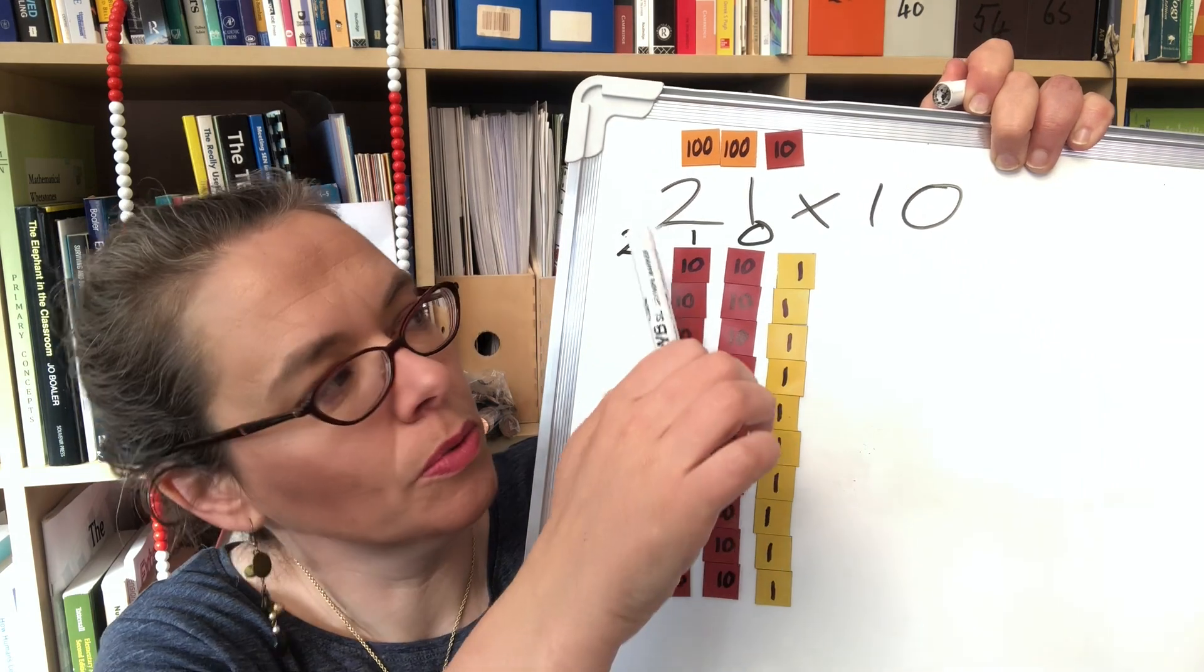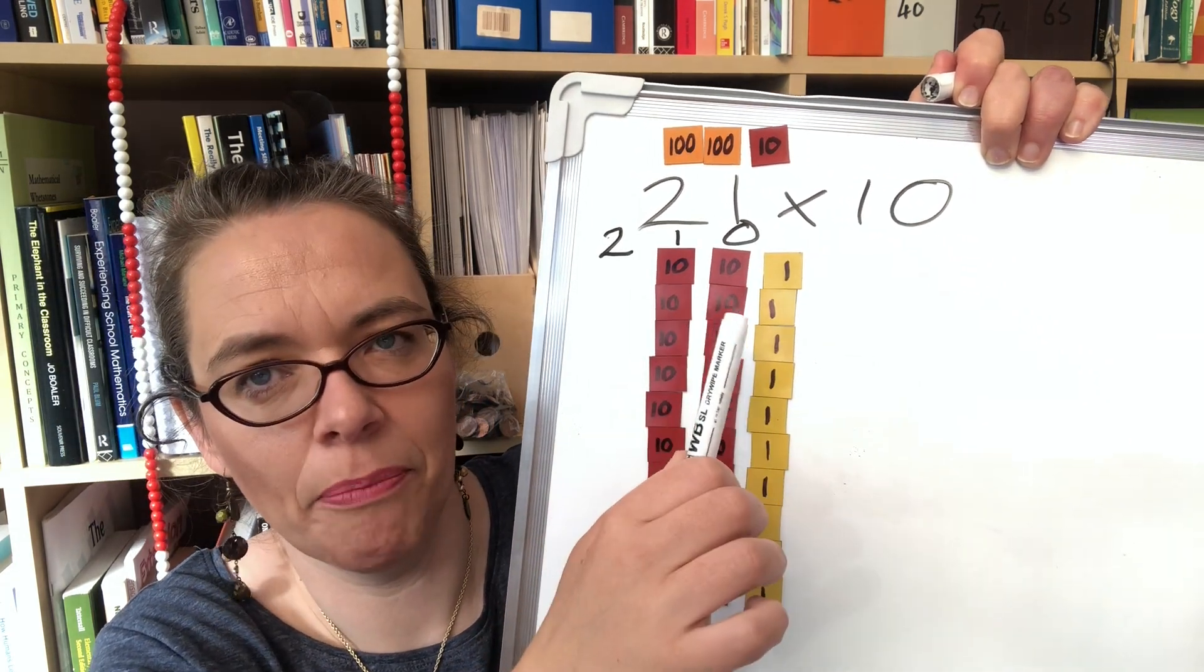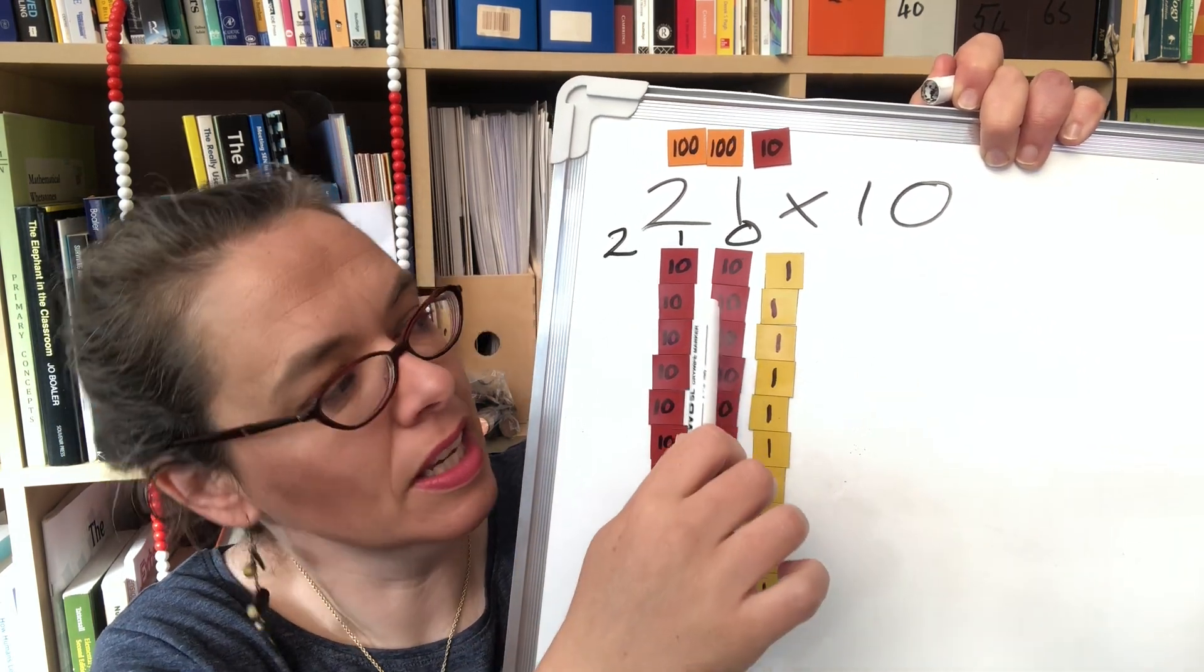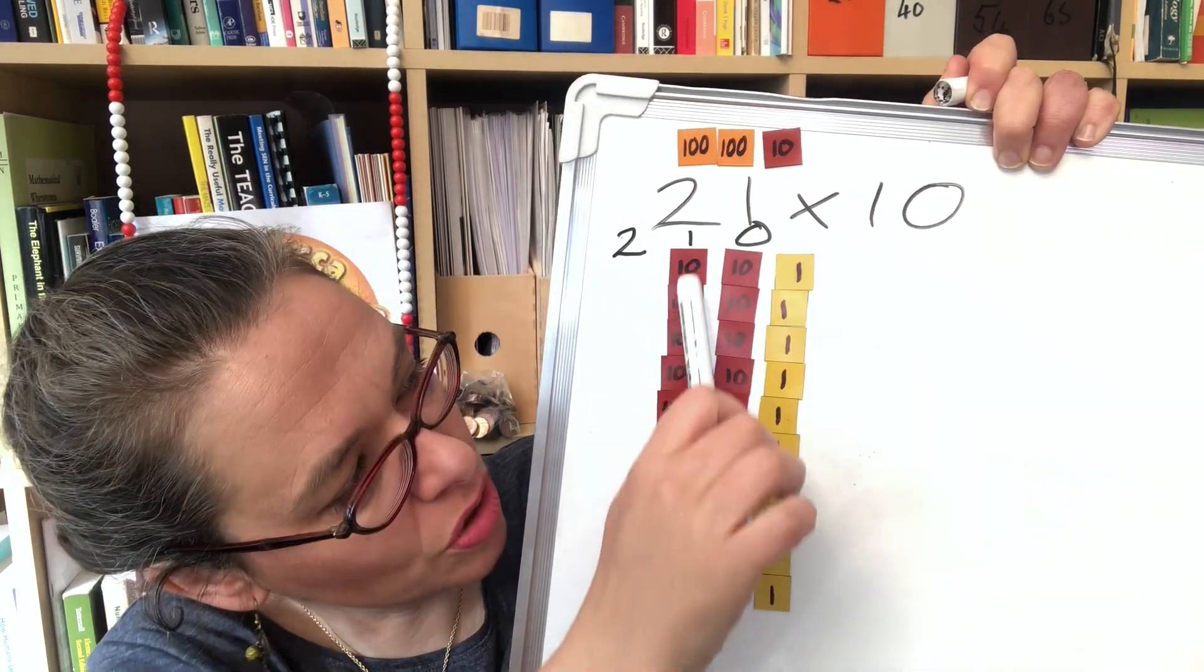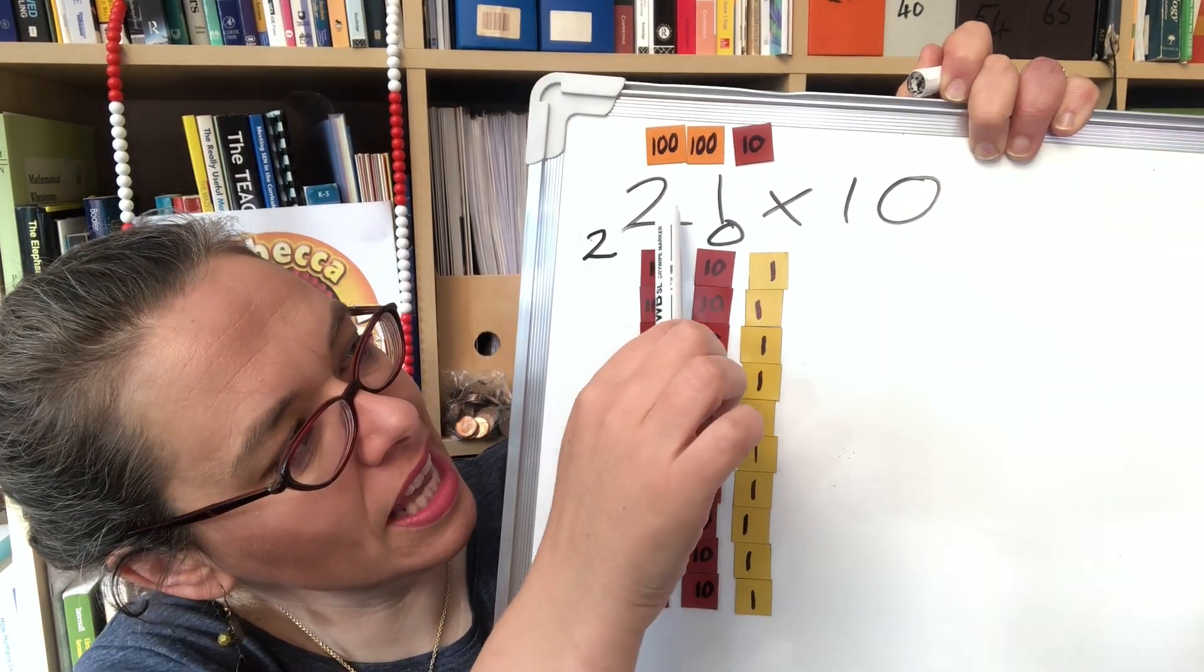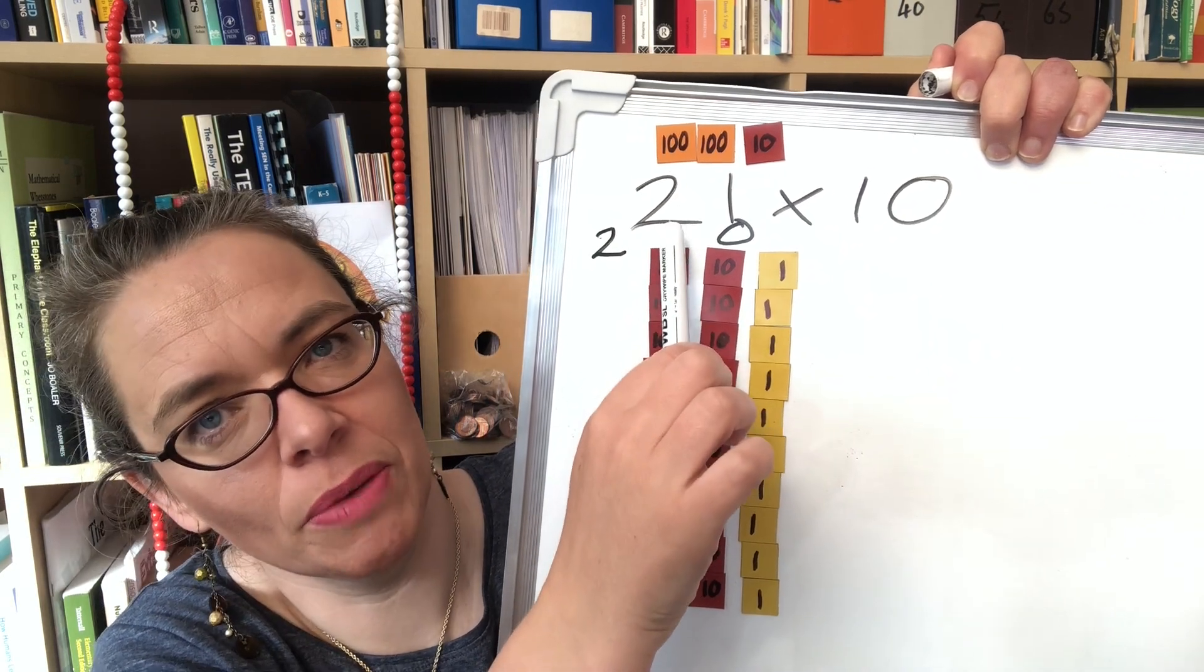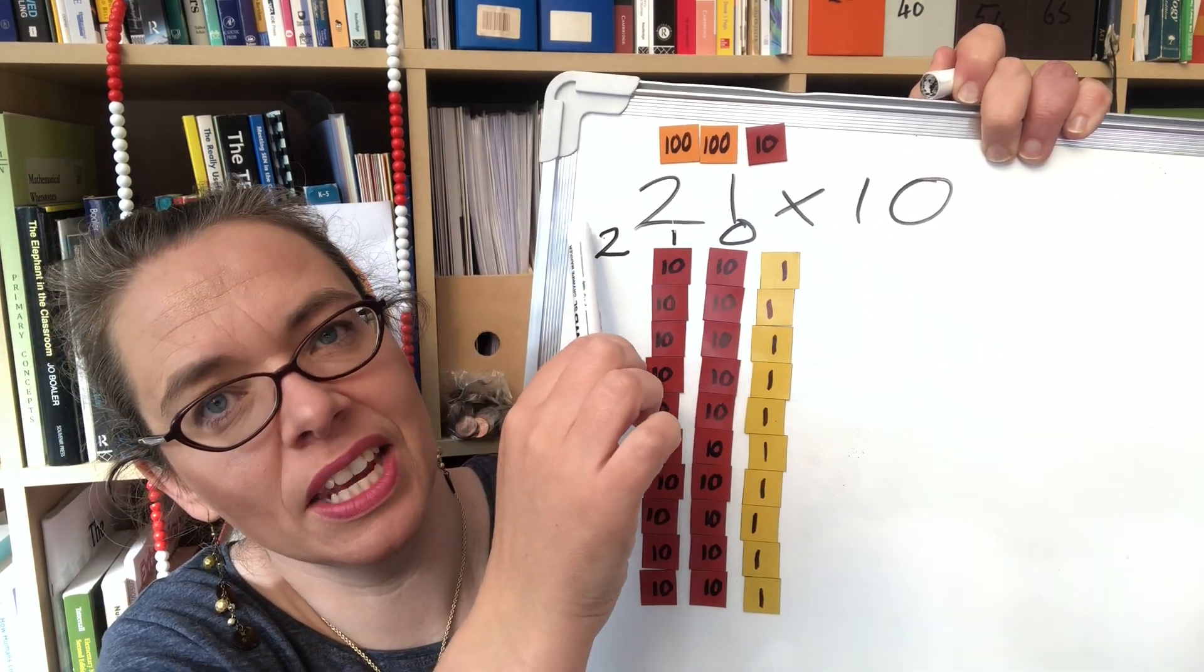And if we work with whole numbers multiplying that by 10 we'll quickly see that there is this shortcut you can just add a zero but structurally what's going on is that everything in one column is becoming something in the next column.